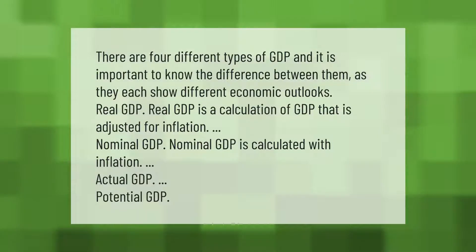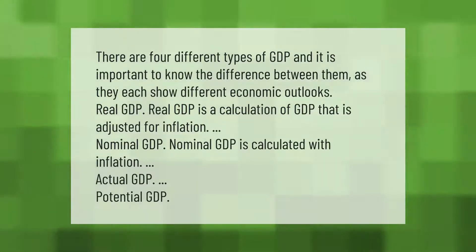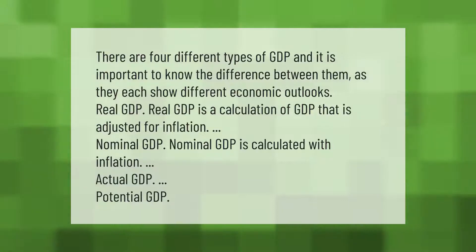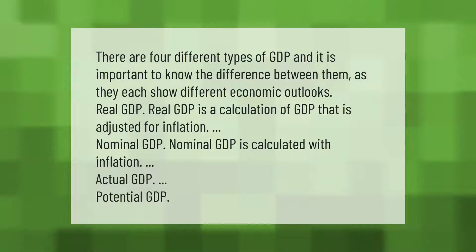There are four different types of GDP, and it is important to know the difference between them, as they each show different economic outlooks. Real GDP is a calculation of GDP that is adjusted for inflation. Nominal GDP is calculated with inflation. The four types are: real GDP, nominal GDP, actual GDP, and potential GDP.